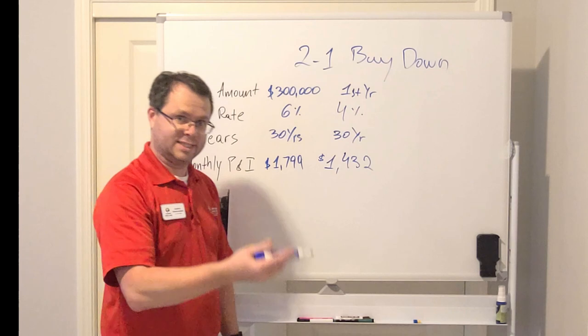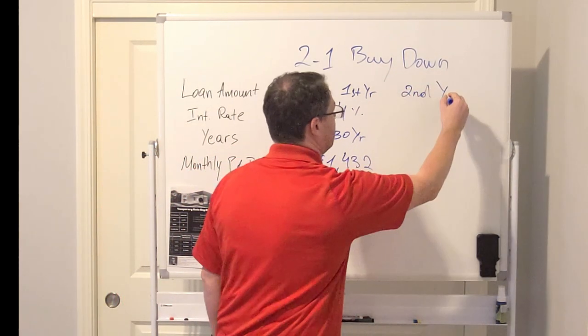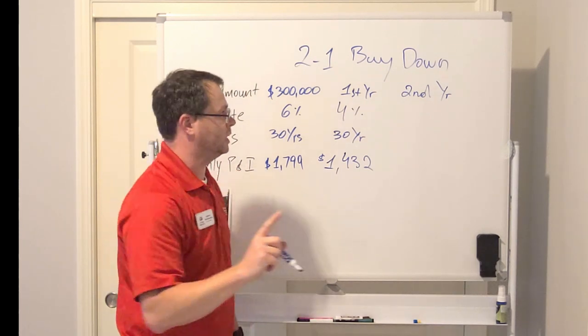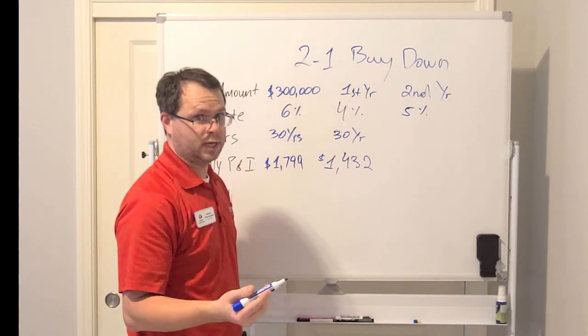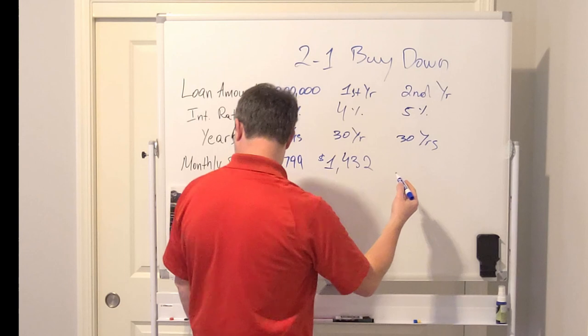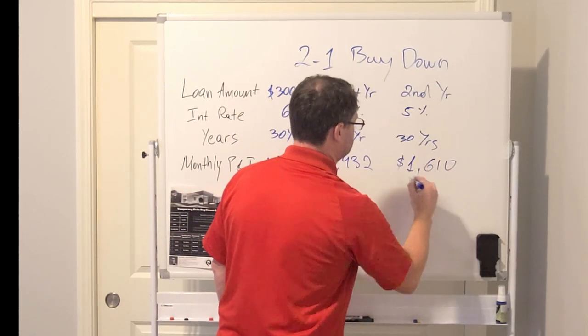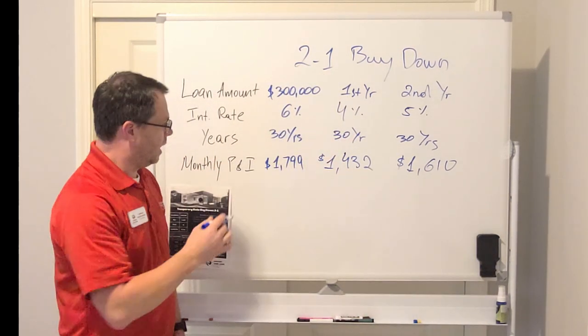Now the second year, the interest drops only by 1%. So now your interest rate is at 5%. We still have a 30-year mortgage. And now your payment is $1,610.